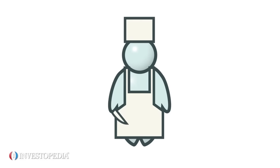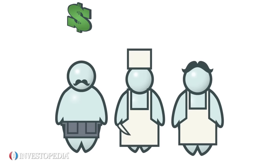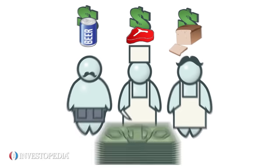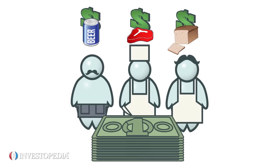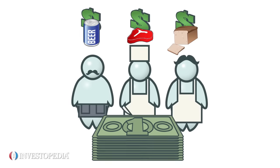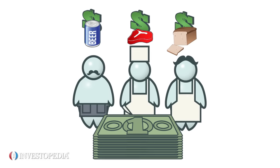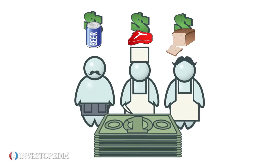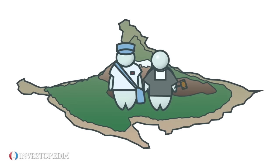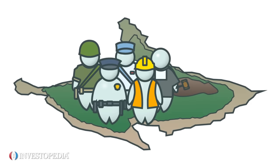For example, the butcher, brewer, and baker make money by selling products people want. They enjoy financial rewards because they meet customers' needs. Smith argued that this system creates wealth not only for the butcher, brewer, and baker, but also for the country whose citizens work to better themselves and their finances.